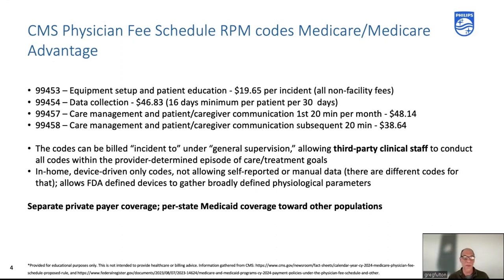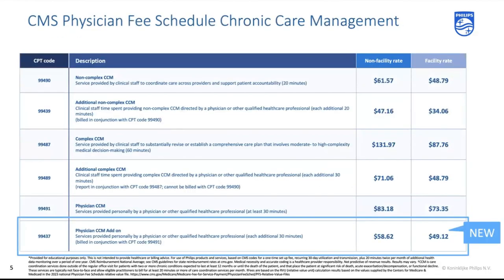You'll see that in FQHCs as well, where some care management codes have historically been billable, now adding RPM. Looking at the so-called CCM code family — my term — if you go through these code sets, you'll see basic chronic care management codes. Let's pause a minute and talk about general supervision and incident-to, which allows third-party contracts to come in and conduct these codes on behalf of a physician or health system.